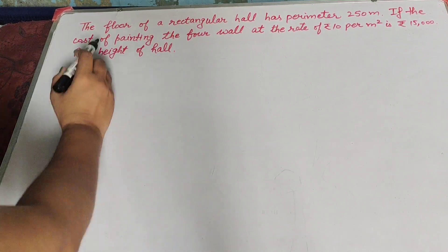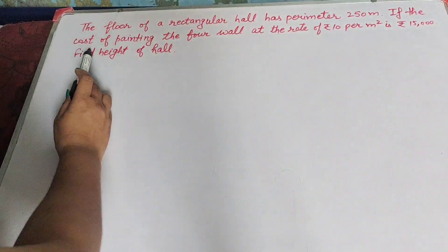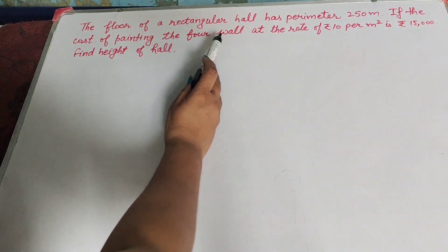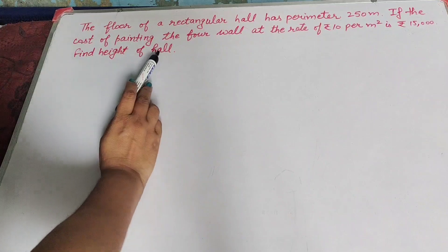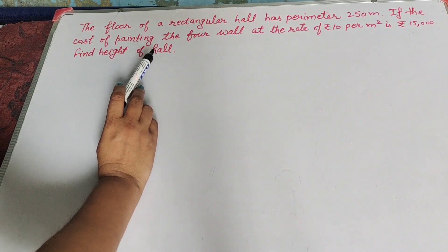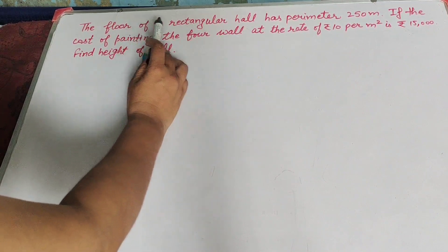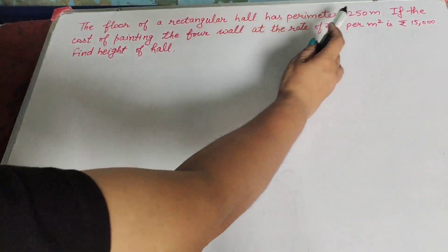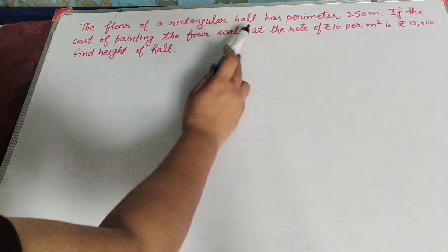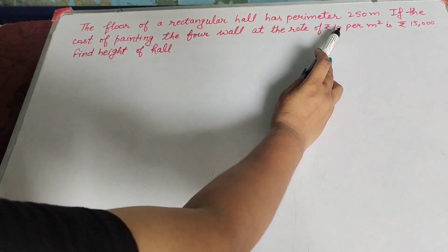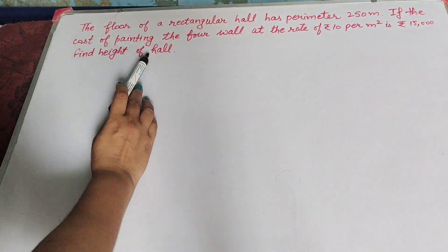Hello friends, welcome to my channel. In this video we discuss: the floor of a rectangular hall has a perimeter of 250 meters. If the cost of painting the four walls at the rate of rupees 10 per meter square is rupees 15,000, find the height of the hall. The perimeter of the rectangular hall is 250 meters, and the cost of painting the four walls equals rupees 10 per meter square.